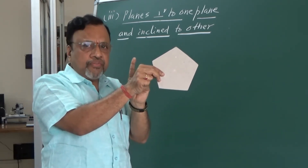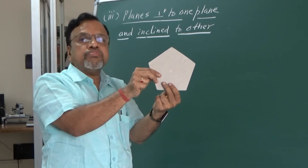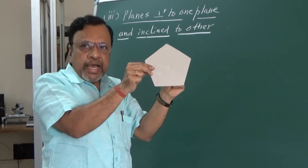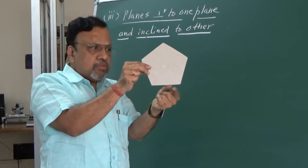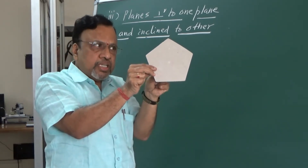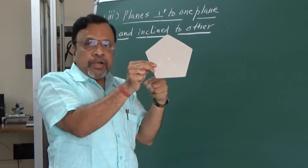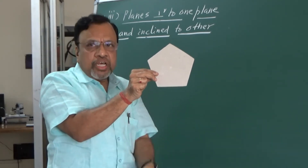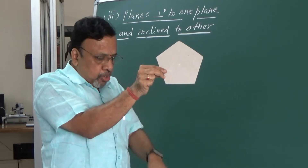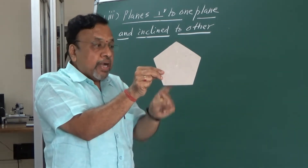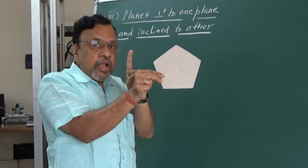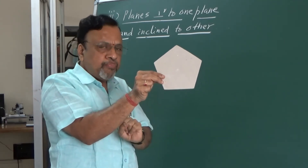Always remember: the inclination of a plane is defined such that we can see this inclination in that particular view wherein the lamina is seen as a line. For example, if I hold it this way, this particular plane is perpendicular to HP but inclined to VP. Where do you see the inclination phi? In the top view we see the VP details.